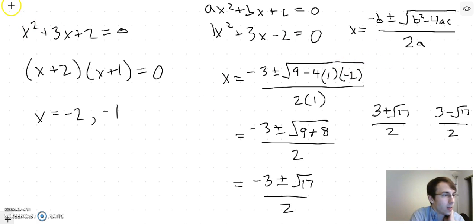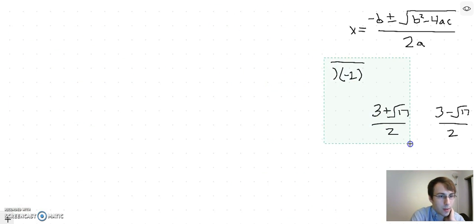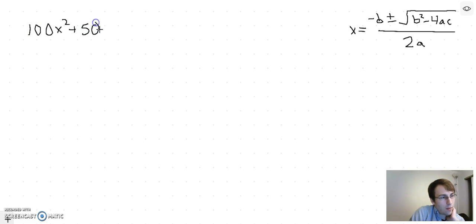Let's do another example of using the quadratic equation. So I'm going to keep the quadratic equation up here. How about something like 100x squared plus 50x minus 400 equals zero. So actually even better, why don't we make this 100.